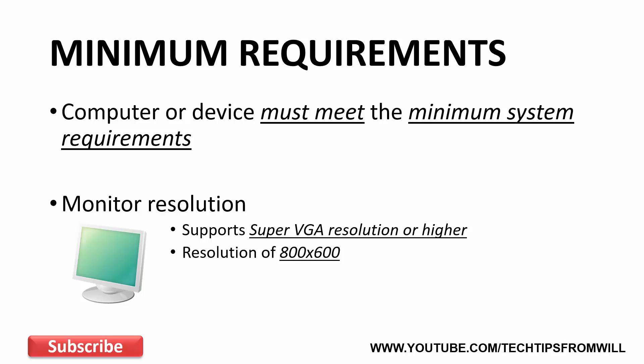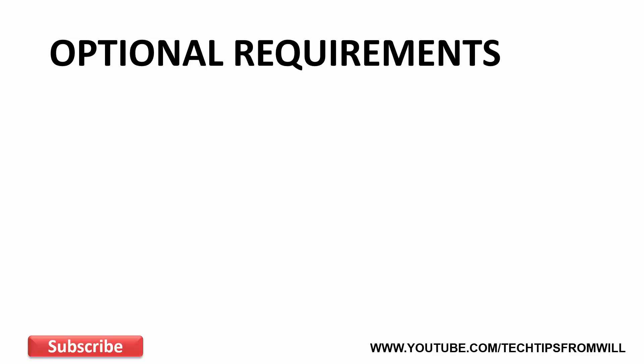This covers the minimum system requirements for Windows 10, but you should also know that there are some optional system requirements. The minimum system requirements I have covered so far mean exactly that — they are the absolute minimum requirements needed to get Windows 10 installed onto a computer. However, there are certain features in Windows 10 that can only be used if you have the necessary hardware, software, or other requirements in place to support it.